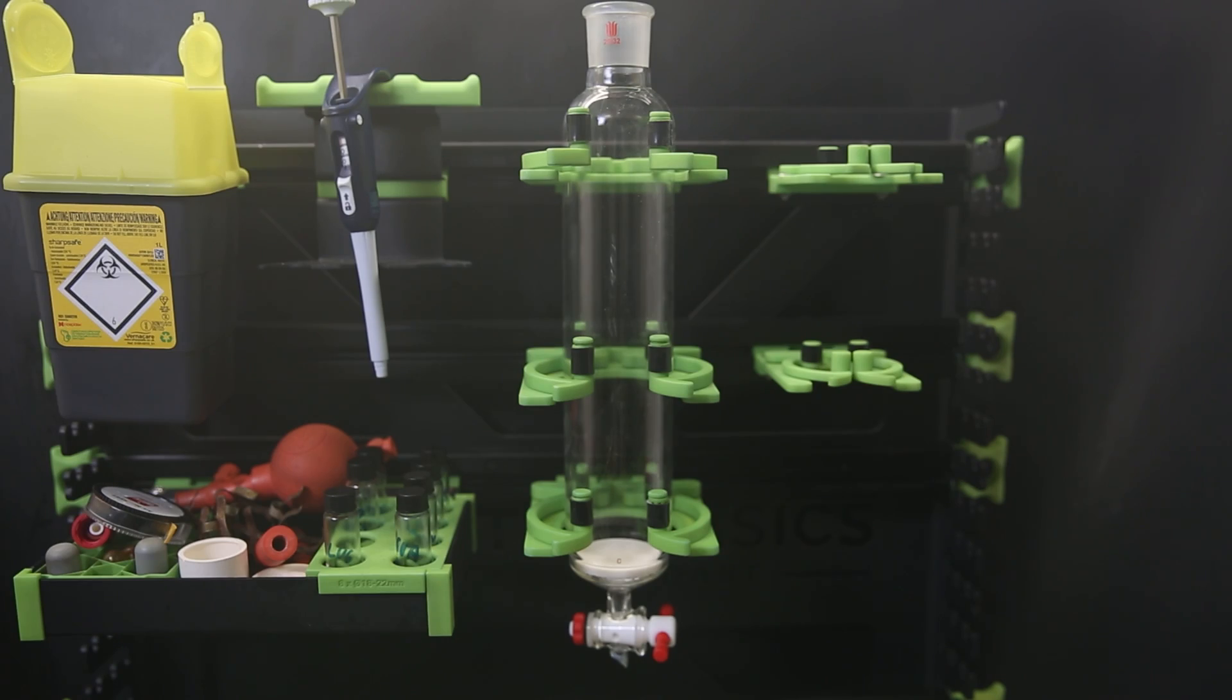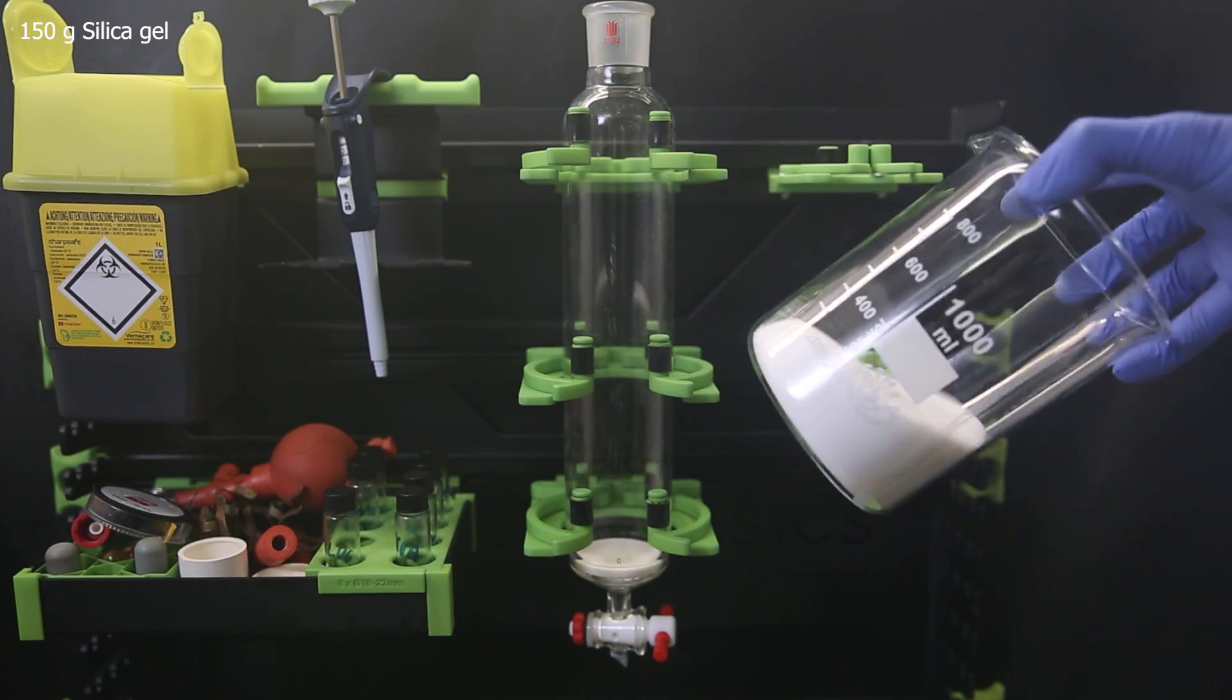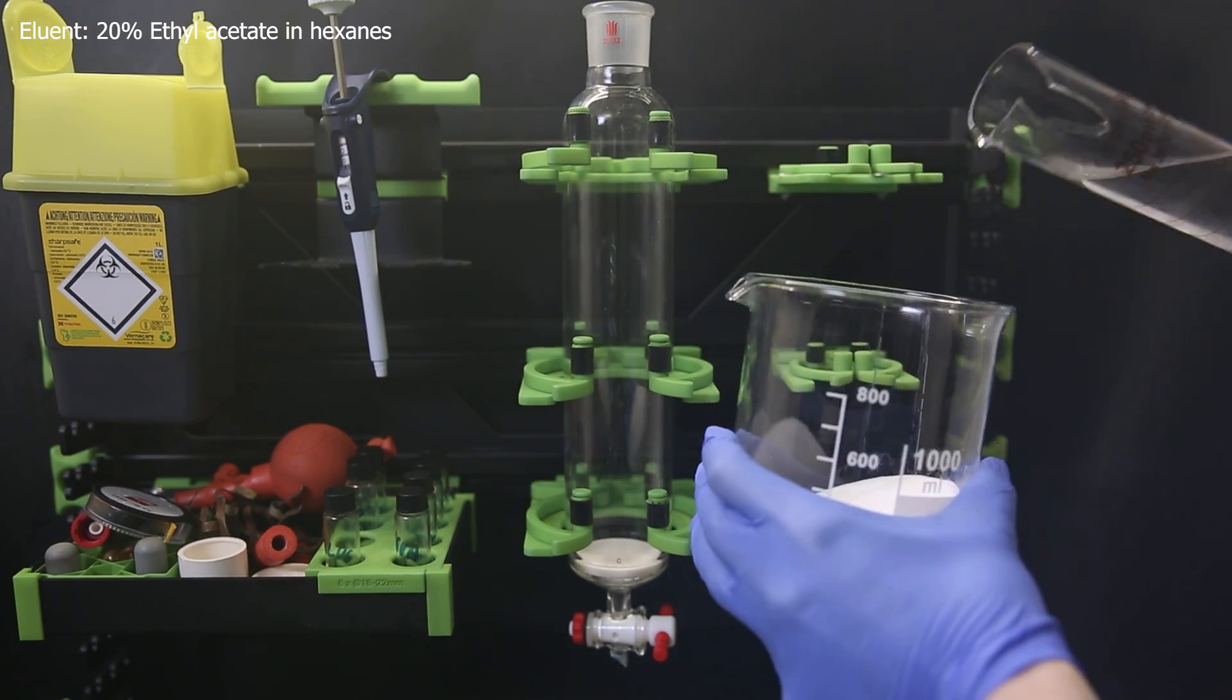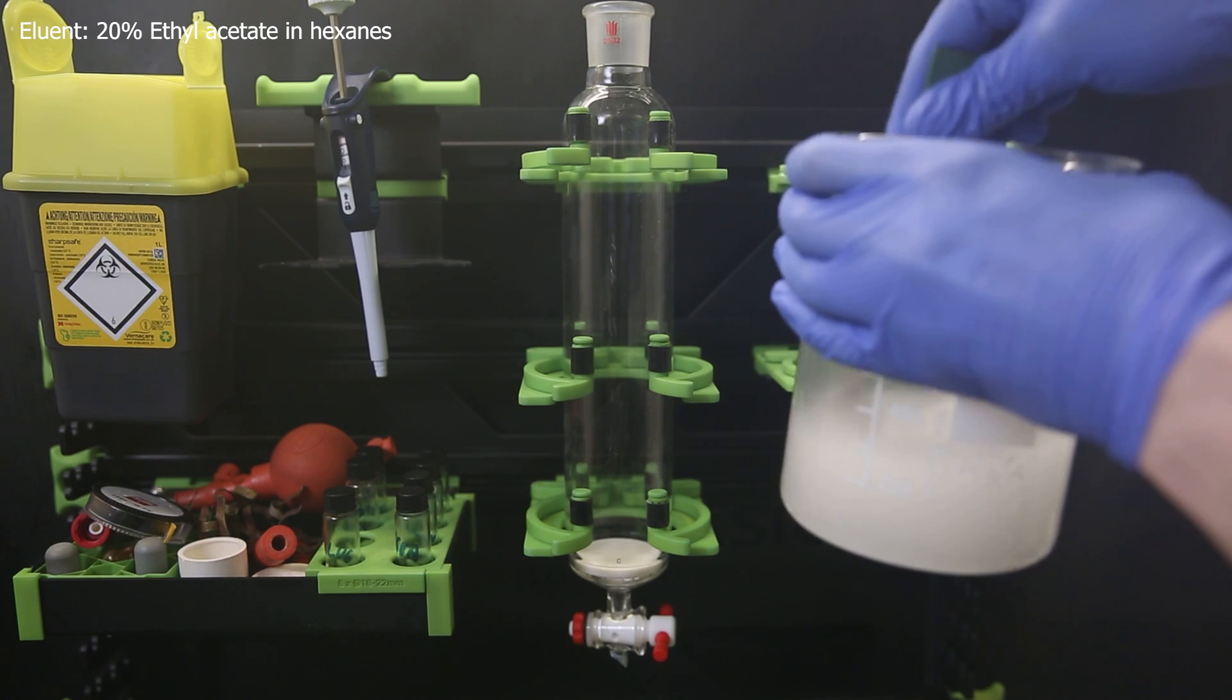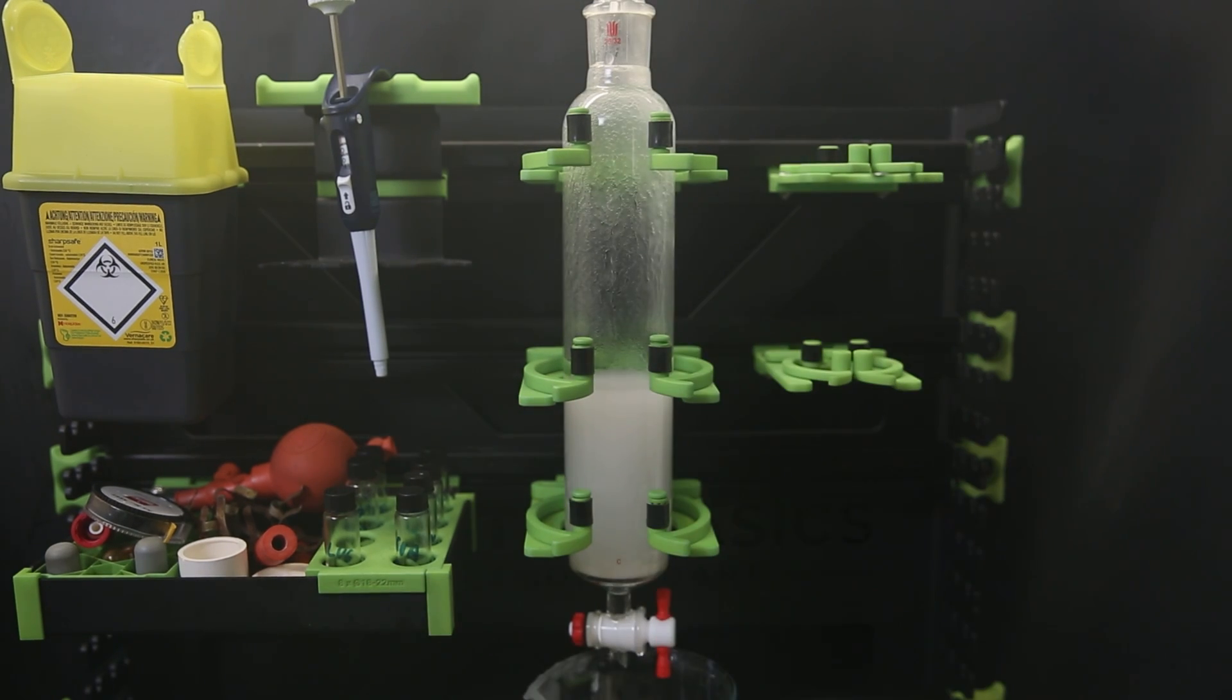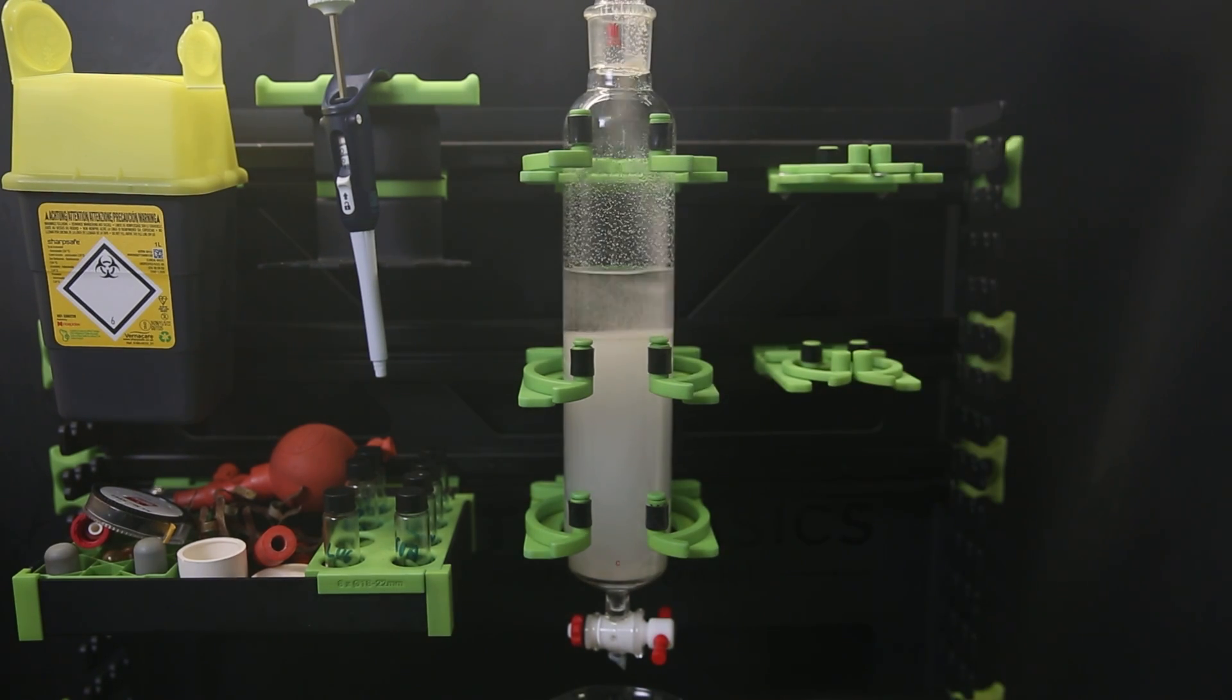So I set up a column and weighed out about 150 grams of silica gel. I mix that thoroughly with the eluent, which is 20% ethyl acetate in hexanes. I then pour it all into the column along with more eluent that I run through several times to pack the silica tightly. When that's done, I put a small layer of sand on top to protect the silica.